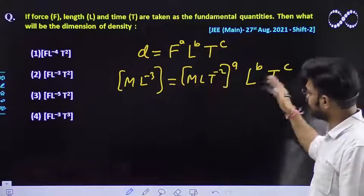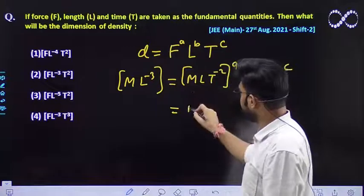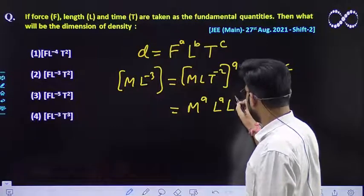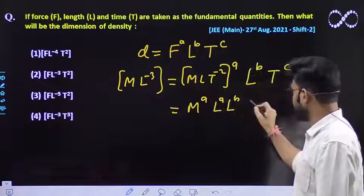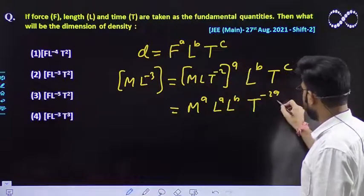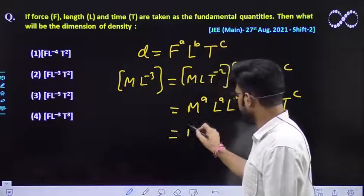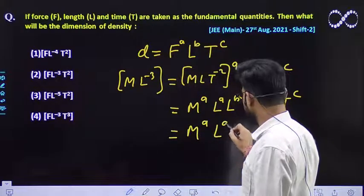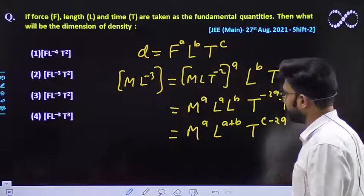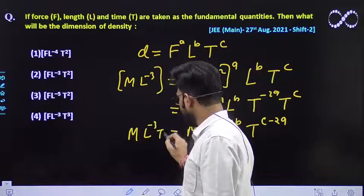So we need not write different things over here. So eventually the right hand side would become, M^A, L^A and L^B is also multiplied with it. So here also T must be equal to minus 2A and multiplied by T^C. So the right hand side would become M^A, L^(A plus B) and T would become C minus 2A. Here it is M, L^-3 and T was 0.